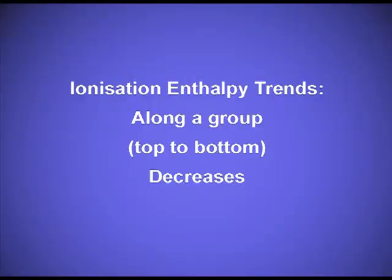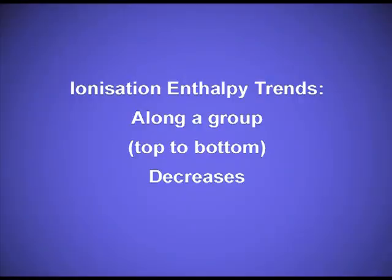Ionization enthalpy trends: along a group, we always talk about top to bottom. Ionization enthalpy decreases down the group. The reason is that atomic radii is increasing when we move from top to bottom. When the size is increasing, the valence electron is moving away from the nuclear pull, so we need very less amount of energy to remove that valence electron going down the group.